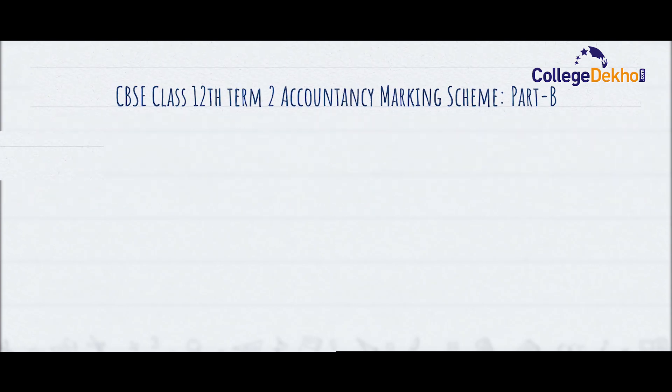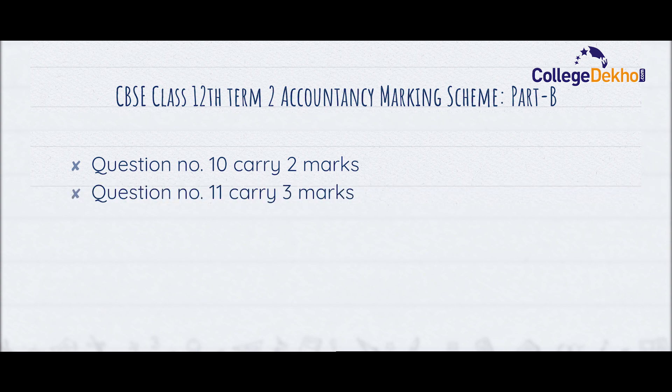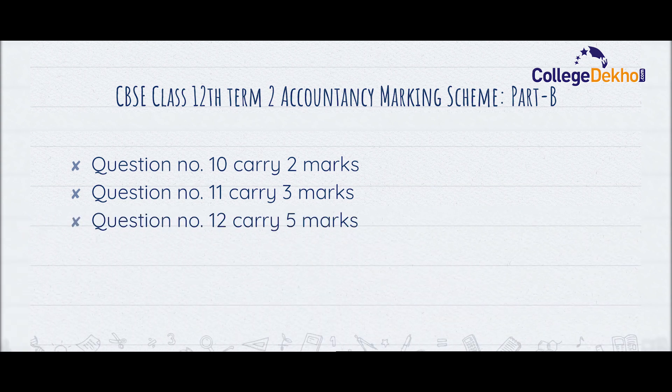Now let us look at the Part B marking scheme. Question number 10, which is Short Answer Type 1, will carry 2 marks. Question number 11, Short Answer Type 2, will carry 3 marks, and question number 12, the Long Answer question, will carry 5 marks.